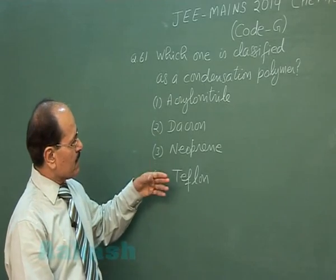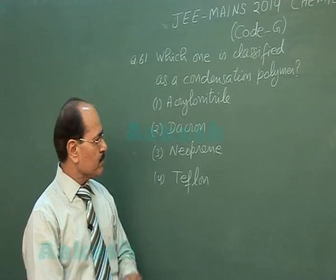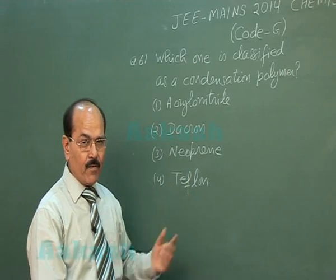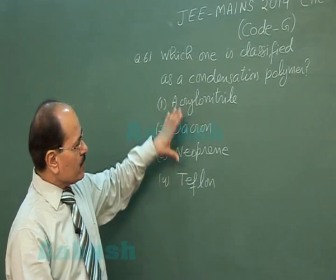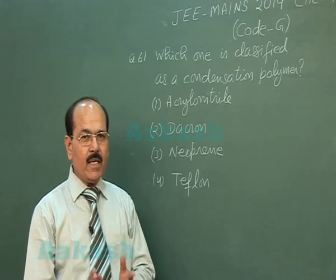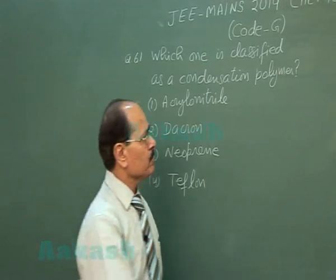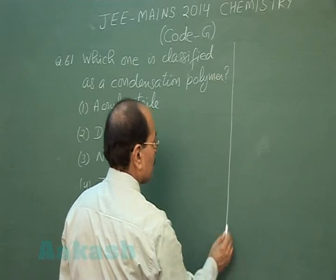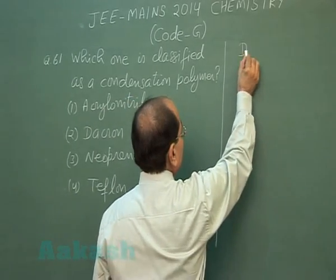The four options are acrylonitrile, Dacron, neoprene, and teflon. Out of these four options, Dacron is a condensation polymer.